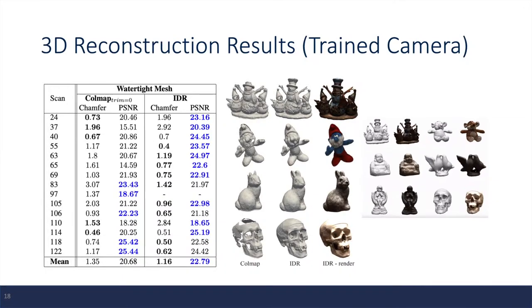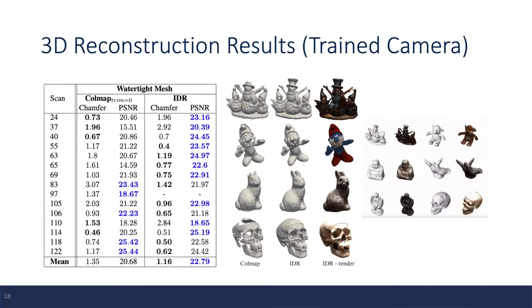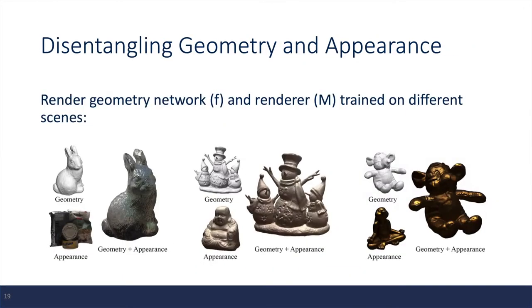And this next experiment is quite interesting, where the authors took the geometry network and rendering from different objects and combined them to produce a new object.